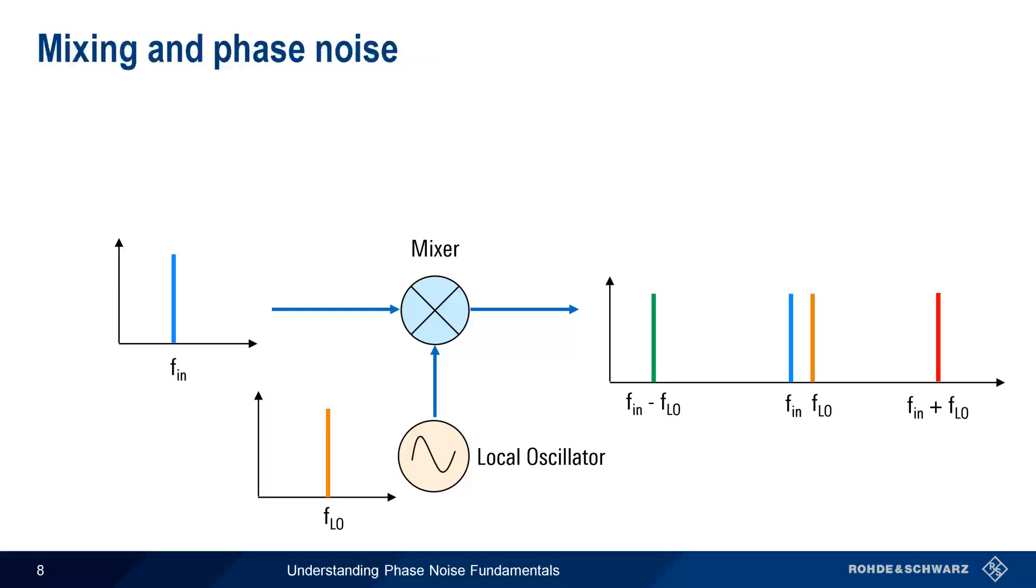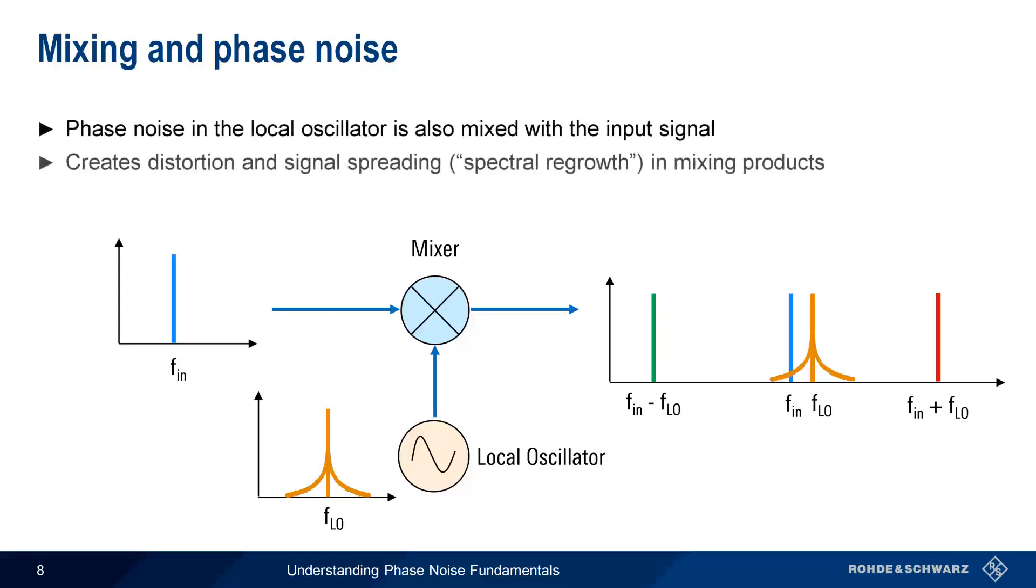What happens if the local oscillator has phase noise? This phase noise is also mixed with the input signal, leading to an output whose mixing products are distorted and spread in frequency due to the phase noise present in the local oscillator. This phenomenon is sometimes called spectral regrowth.